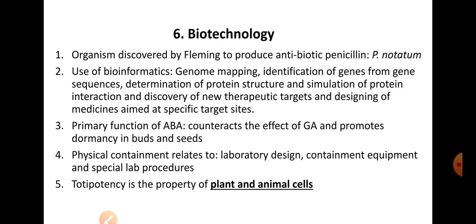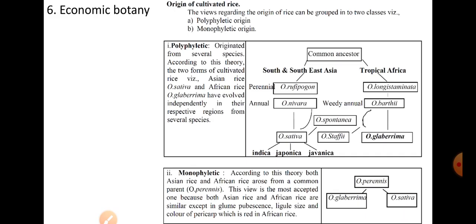The primary function of ABA (Abscisic acid): like ethylene, it plays a major role in inhibiting growth — it counteracts the effect of gibberellic acid and promotes dormancy in buds and seeds. Physical containment relates to measures involving laboratory design, containment equipment, and special lab procedures. Totipotency is the ability of a cell to develop into a complete organ — seen in both plant and animal cells, and is discussed in the context of stem cell research.